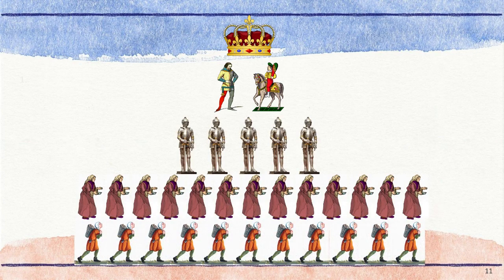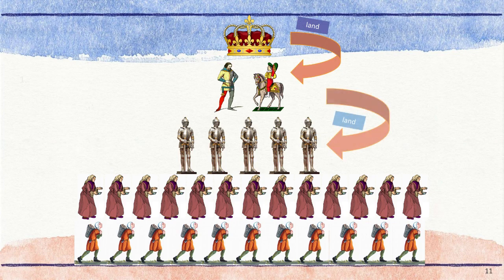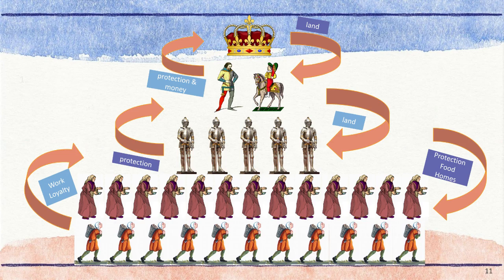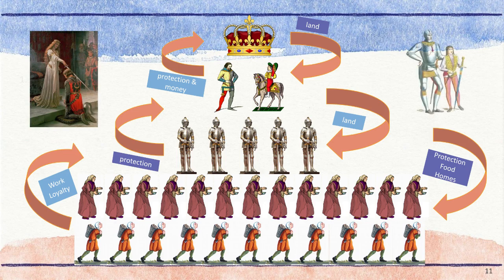Each member of society in the Middle Ages provided something to the other classes, but also received something they needed in return — this might be land, power, food, protection, or even money. Each group of people needed each other. Most people were born into a social class without an opportunity to move up. Nobles continued to be nobles until their death, and their children usually took their place. Peasants were peasants their entire lives. Knights were an exception — some were awarded knighthood for service to the nobles, while some were selected as young boys from a lower social class like a peasant and trained for knighthood.